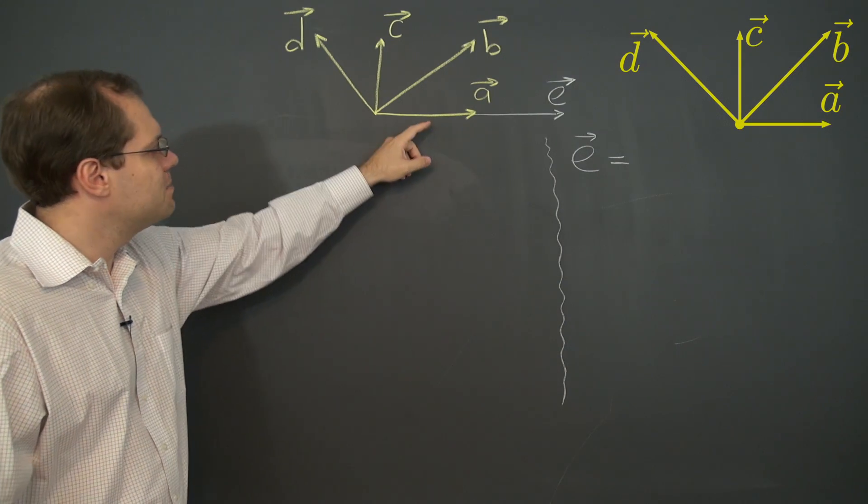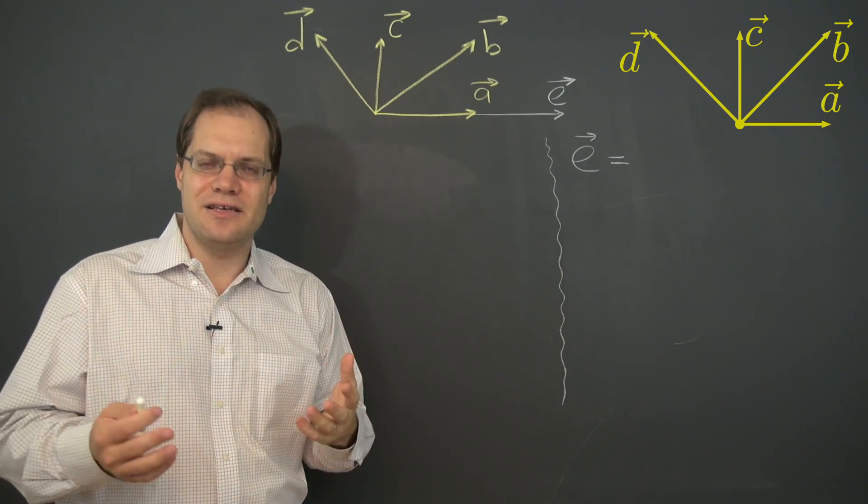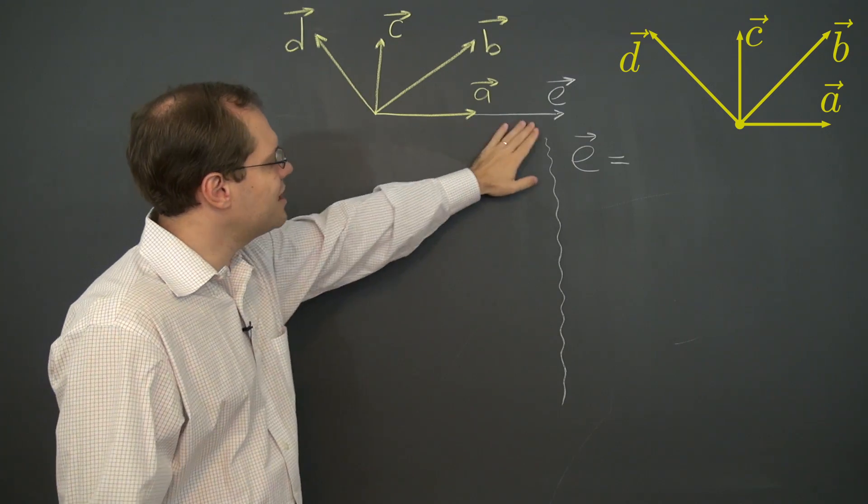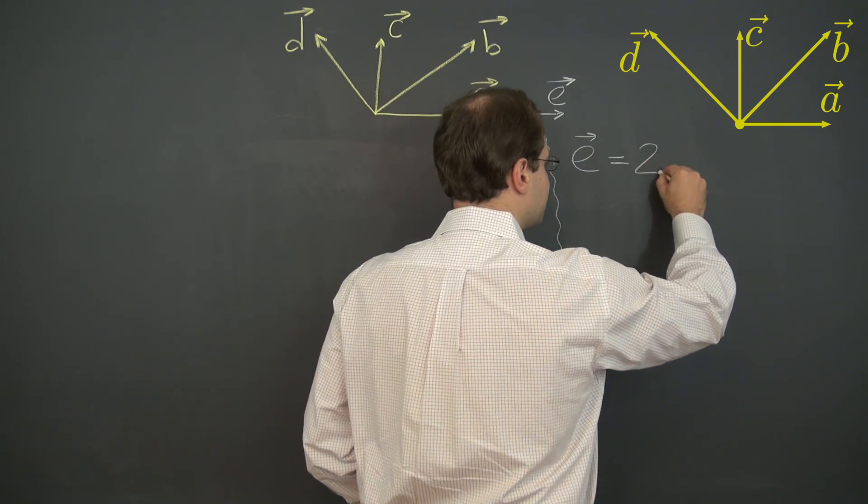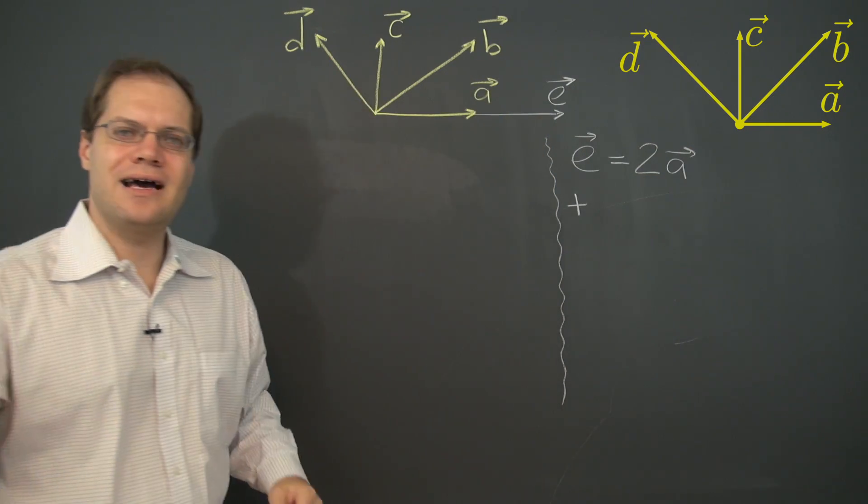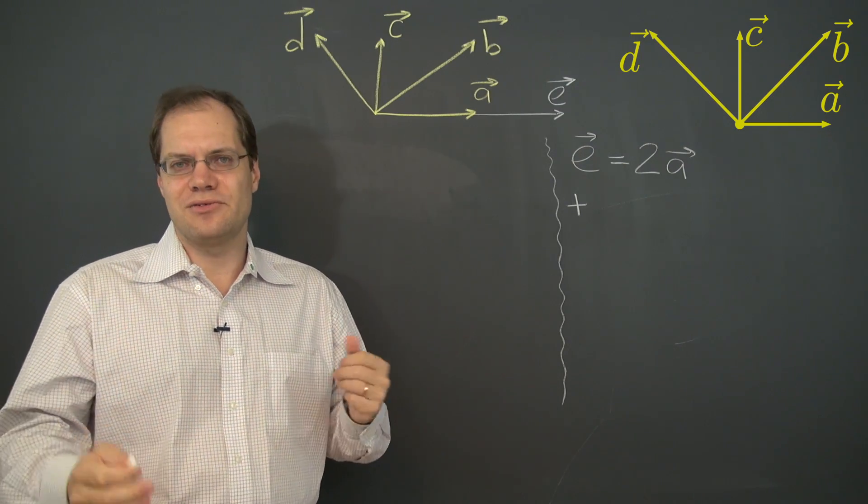And to capture all of those possible linear combinations with a single mathematical expression. Once again, the linear dependency among the vectors A, B, and C is the key to achieving this goal. So let's do the easy part. Of course, E is 2A plus, and now we have to come up with the non-trivial linear combinations that yield zero.